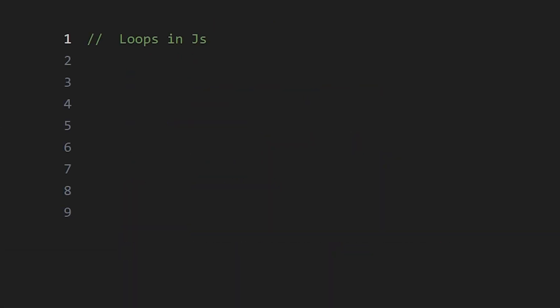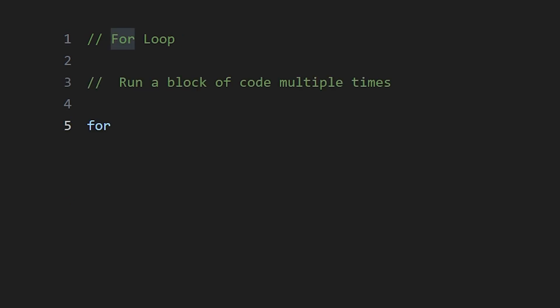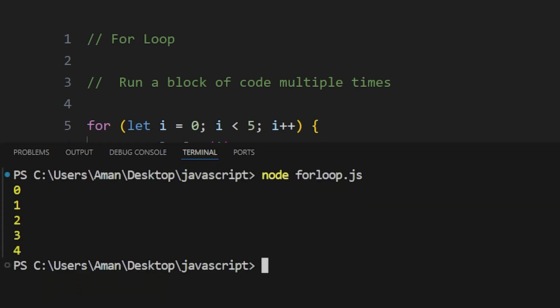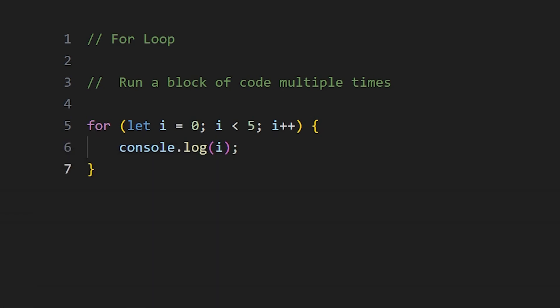There are 6 different types of loops in JavaScript. The first is the for loop, used to run a block of code multiple times. We write 'for' and in parentheses declare a variable, for example i = 0, then the condition i < 5, and then i++ to increment after each iteration. The code in curly braces executes repeatedly — here we print the value of i, so 0 to 4 is printed. When i becomes 5, the condition is false and the loop ends.